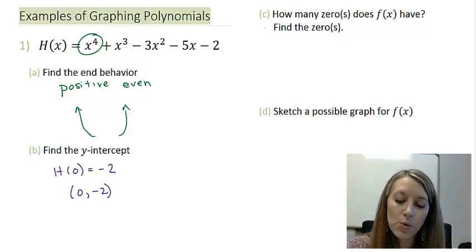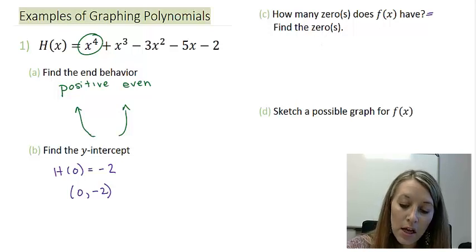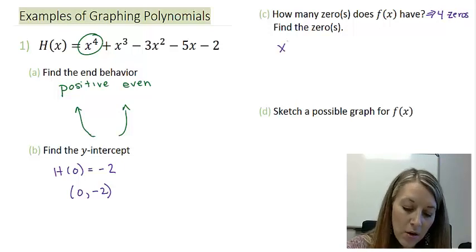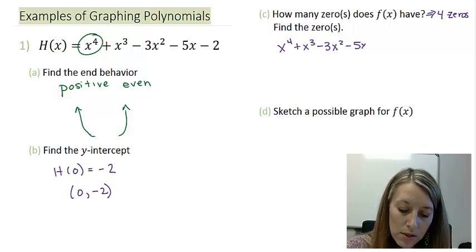Okay, this is where it gets more complicated. How many zeros does our function have? And we need to find those. Since this was degree 4, that tells me I should be having four zeros of my function. How do I find those? I find those by setting this function equal to zero.